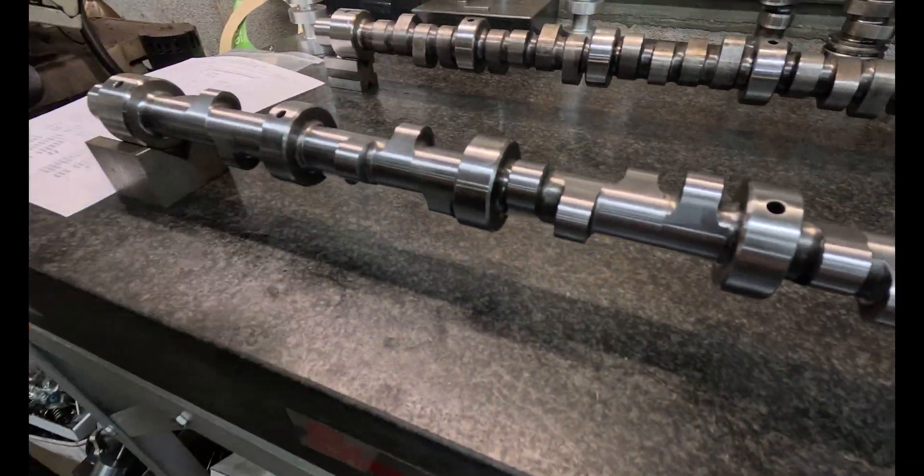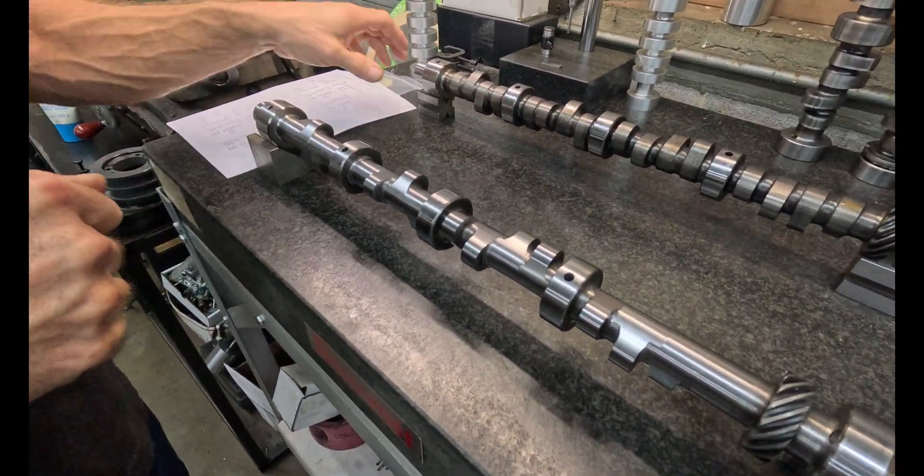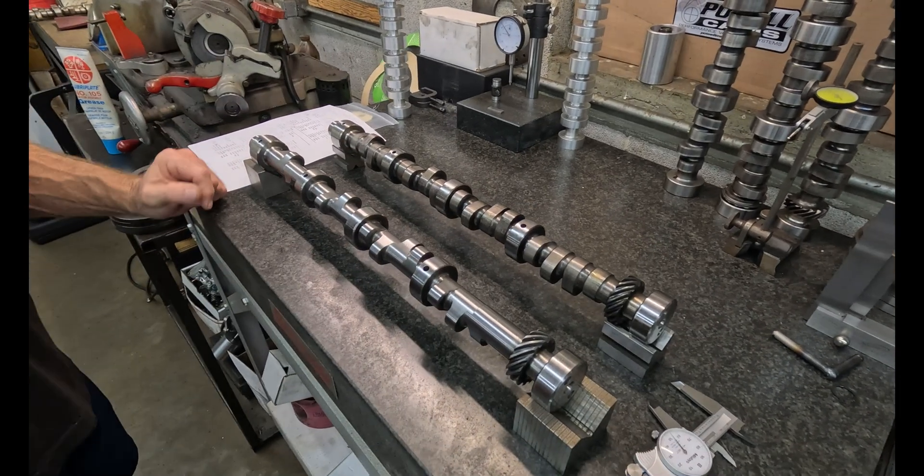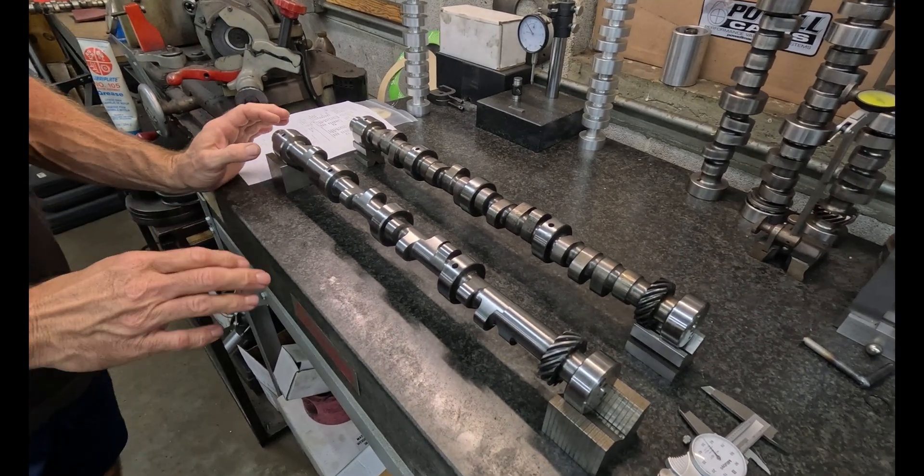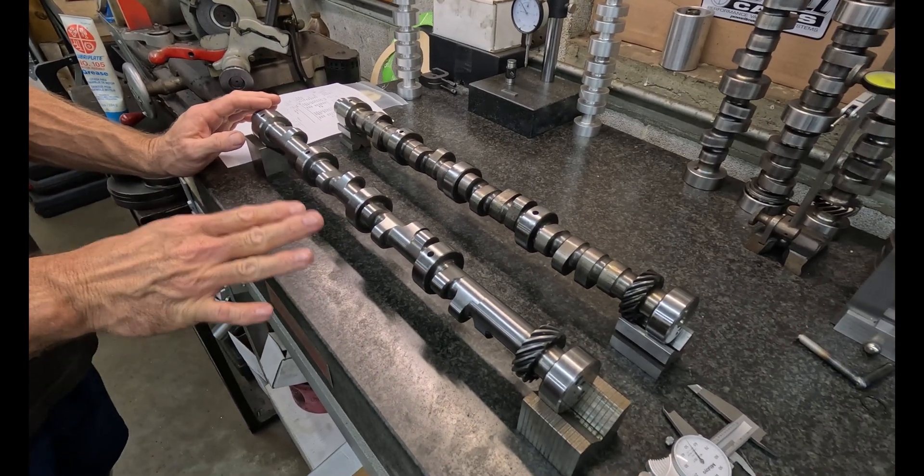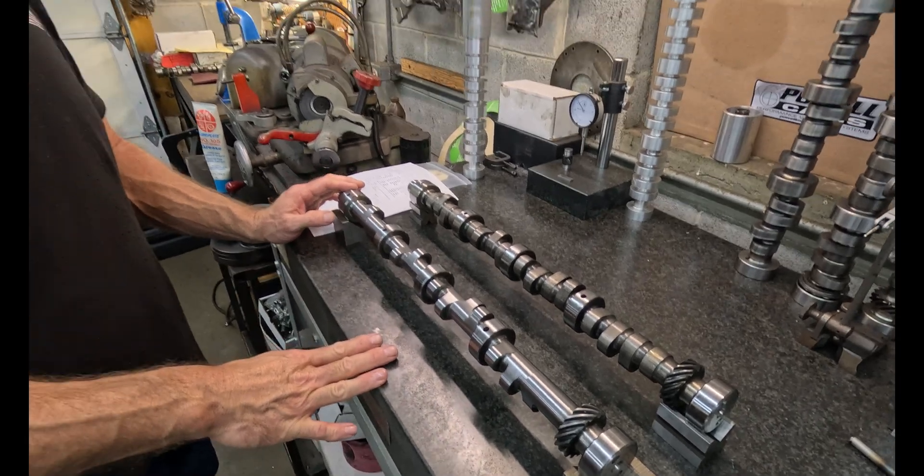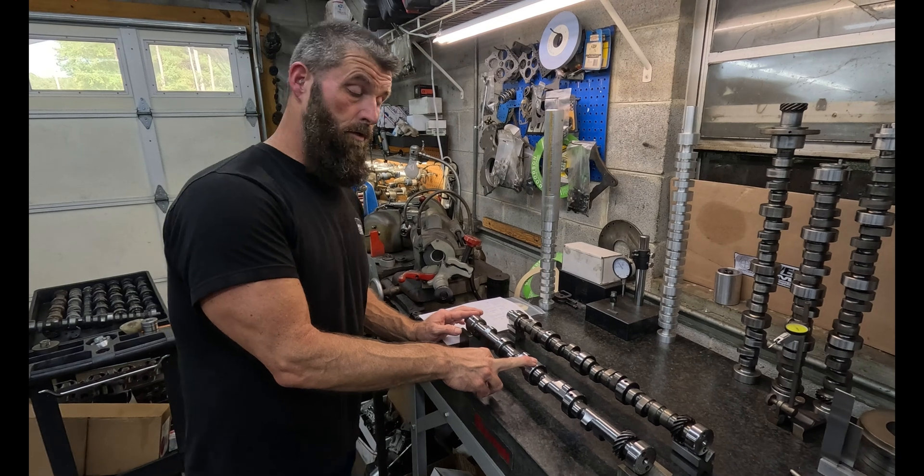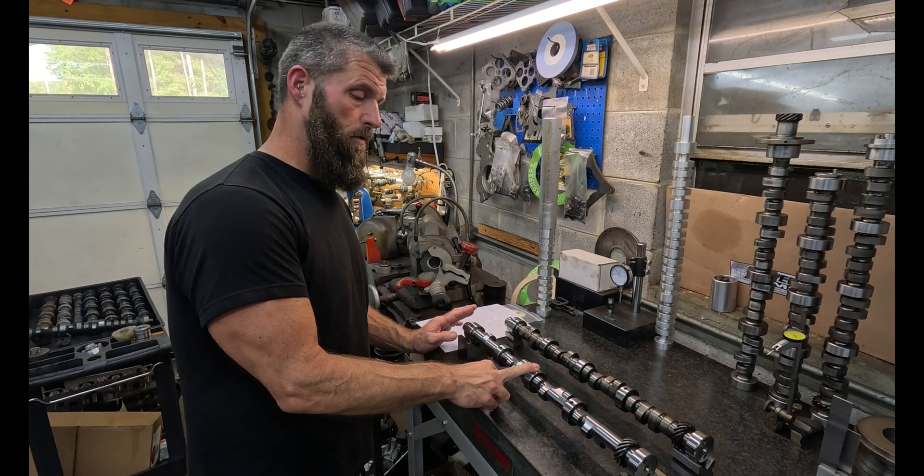So this is a Pontiac roller. This core here is the exact same core as this core, same part number. So what has happened here is the company ground a solid roller on a hydraulic roller core.